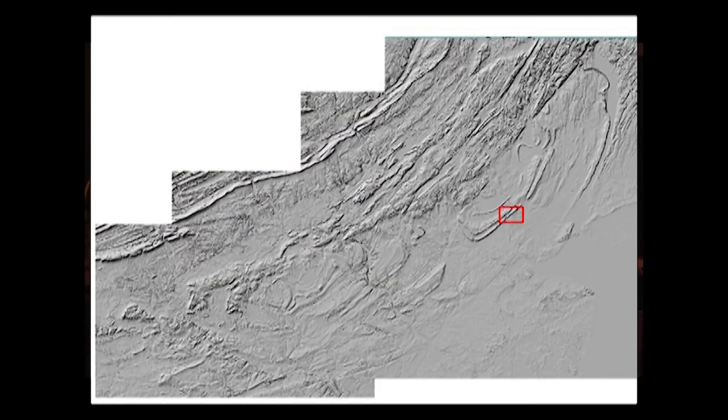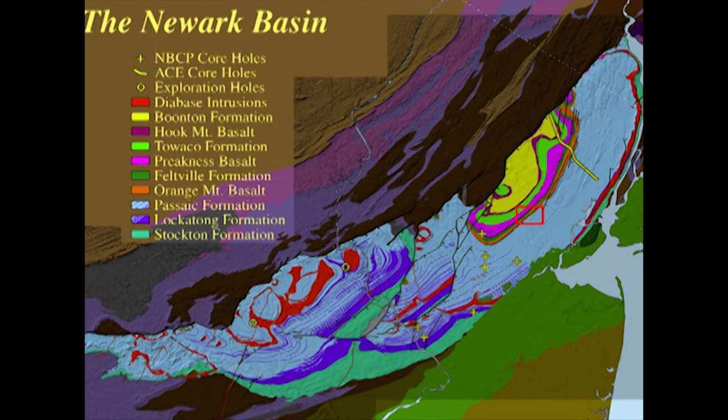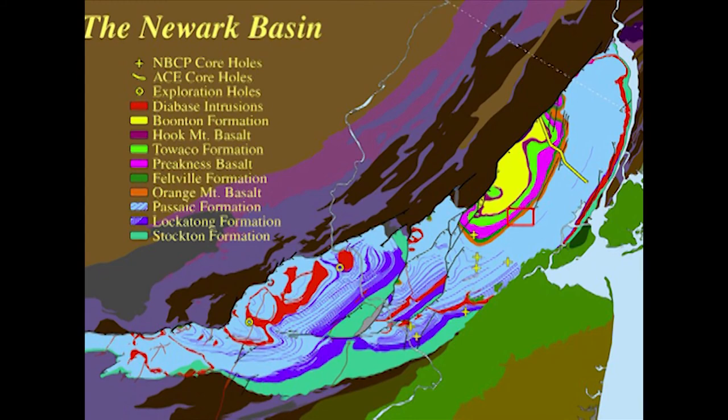Let's superimpose the geology. If you could strip all the soil away and all the human activity and just see the rocks under the soil, you would see this map. And if we remove the topography and just look at the geology, it turns out that these ridges are underlaid by gigantic lava flows.